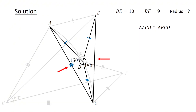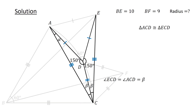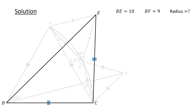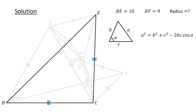Since AC and EC are corresponding sides in congruent triangles, we have AC equals EC. Next, let us define angle DAC as alpha and angle ACD as beta. Then since angle ACD and angle ECD are corresponding angles in congruent triangles, we have angle ECD equals angle ACD equals beta. Following this, consider triangle BCE. Let us apply the law of cosines to this triangle. Given a triangle with sides A, B, and C, and the angle opposite side A being alpha, the law of cosines states that A squared equals B squared plus C squared minus 2BC cosine alpha.